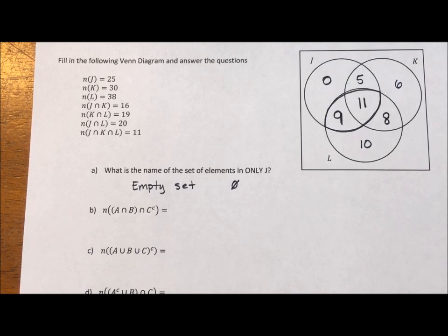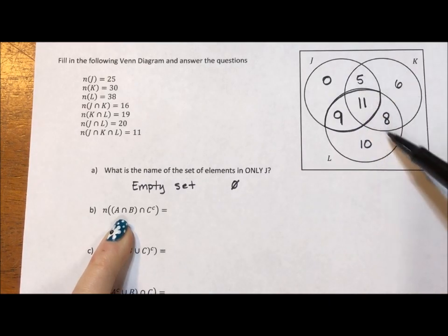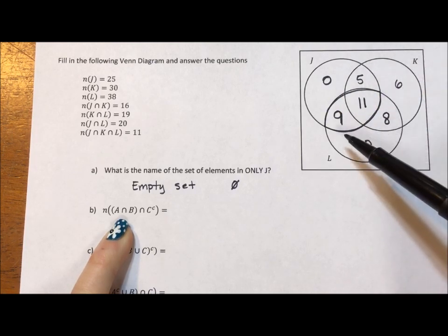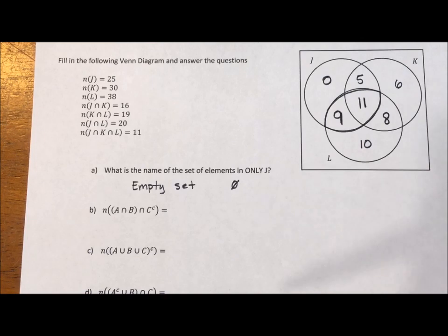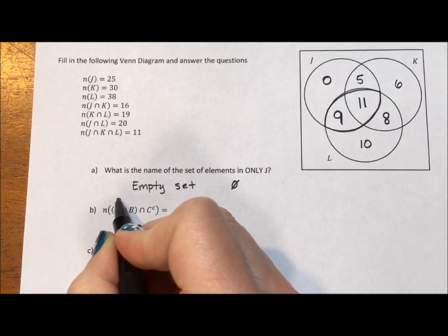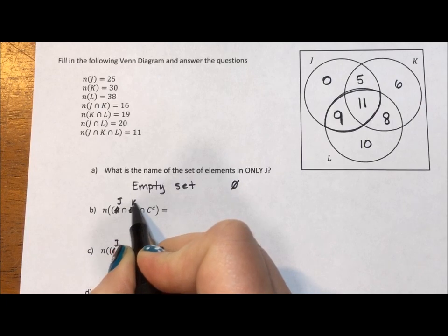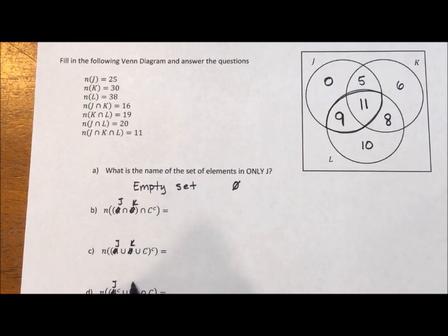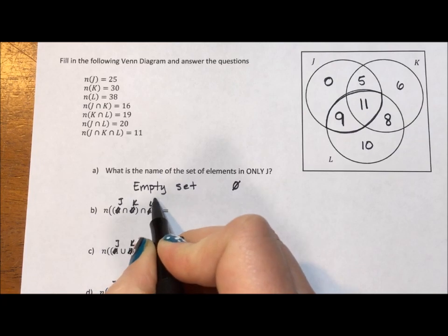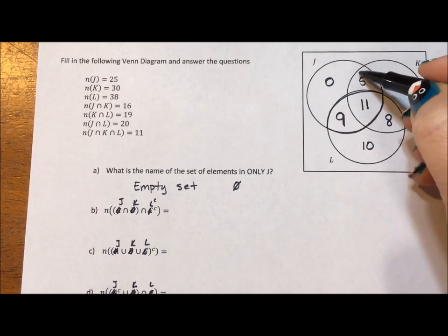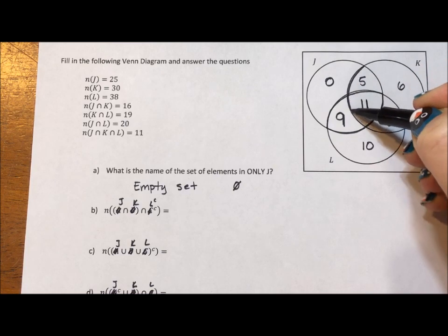Okay, now it says the number in the intersection of A and B, intersection C complement. So if we look at each of the numbers here as the number of elements in that region, then let's say A is J, B is K, and C is L.